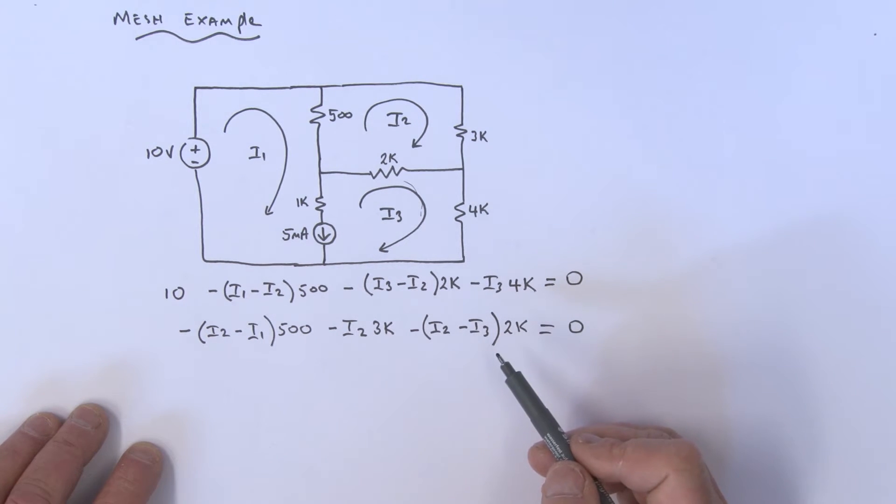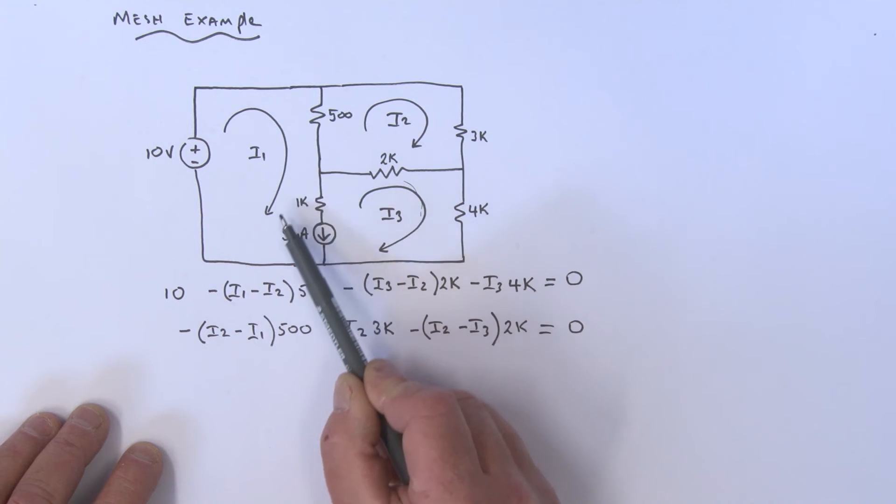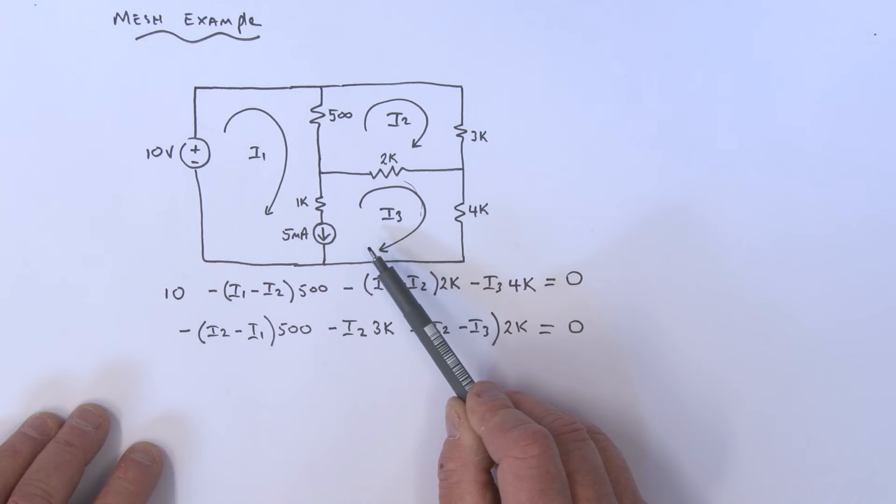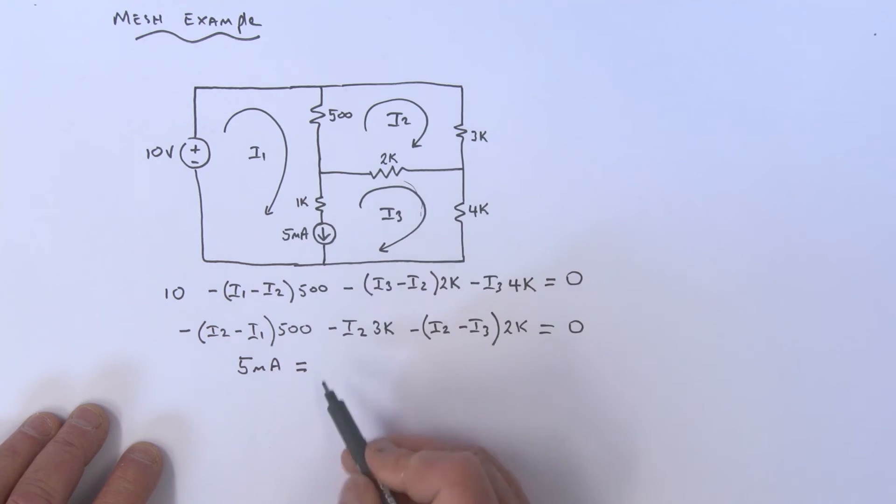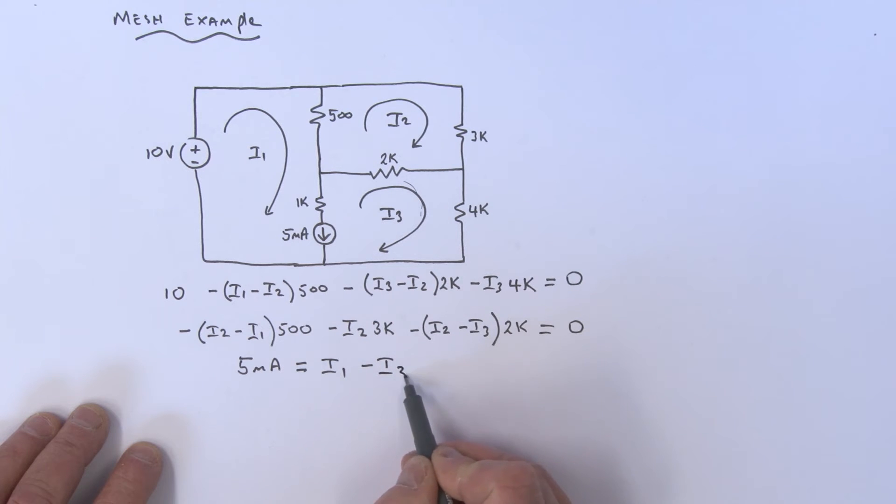You might say we need three equations to solve this problem. But think about this: the current in this branch is 5 milliamps, which is also equal to I1 minus I3. So 5mA equals I1 minus I3.